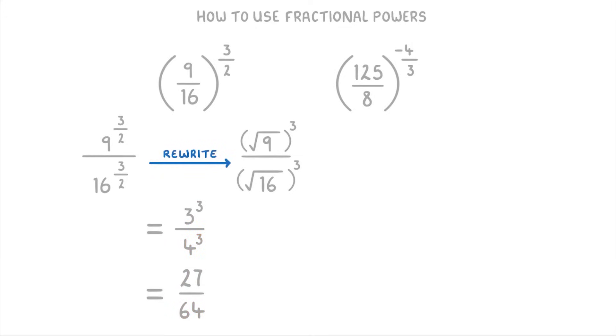For this last one, we do basically the same thing. But because there's a negative sign on our power this time, we have to flip the fraction upside down first, so that it becomes 8 over 125 to the power of positive 4 over 3.